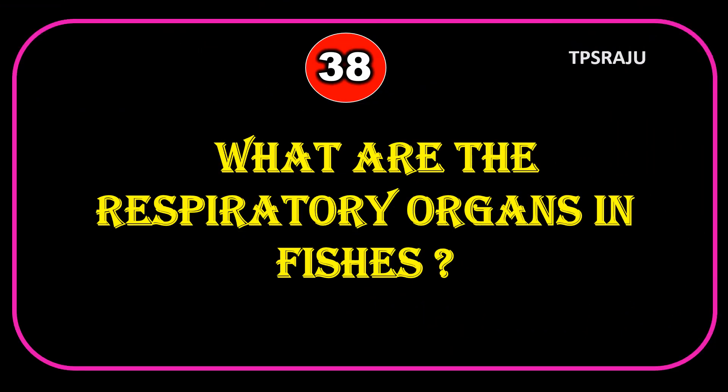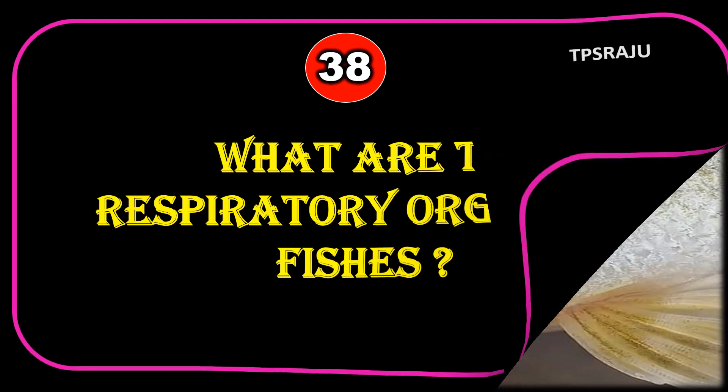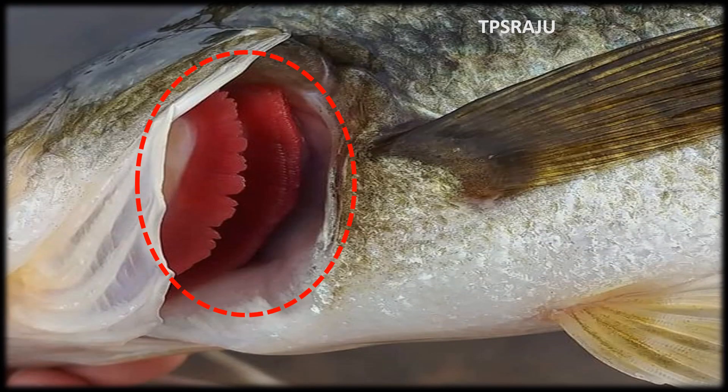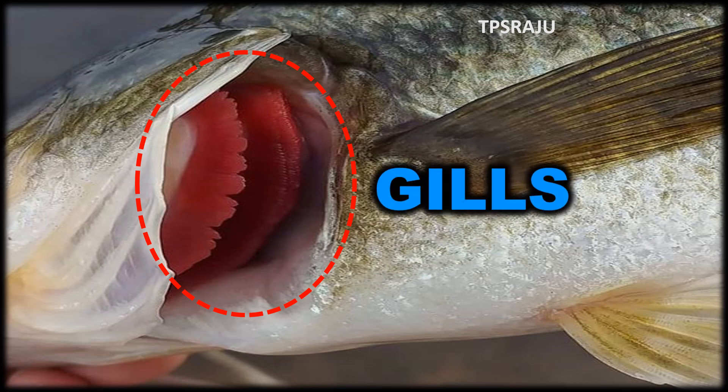What are the respiratory organs in fishes? Gills.